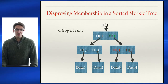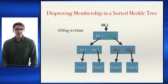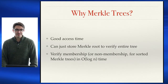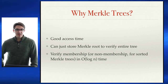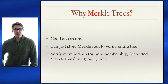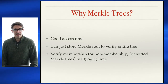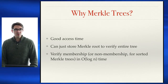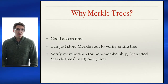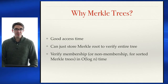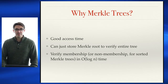If we have a sorted Merkle tree, we can also disprove membership — we can confirm whether something exists or not based on whether those nodes exist. So why use Merkle trees? Good access time: traversing a tree is much simpler than traversing a linked list, which has O(n) traversal time to find anything. Just like with a naive blockchain, we can simply store the Merkle root and verify the entire tree. We can verify that a particular piece of data is stored in a Merkle tree in O(log n) time, or if the Merkle tree has been sorted, we can verify non-membership — that something does not exist in this Merkle tree.